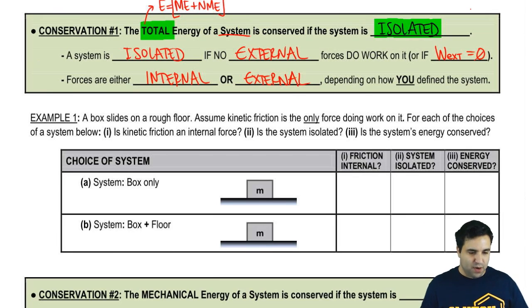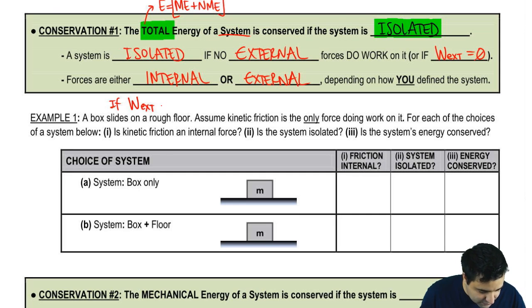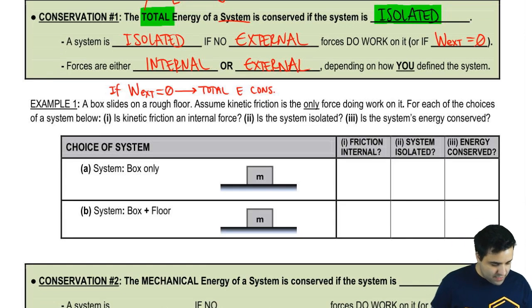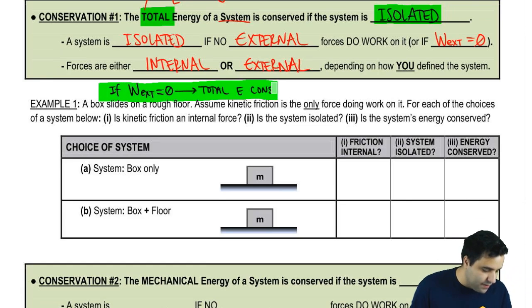But the basic idea, if I could summarize all of this, everything in this box in one line, it would be that if there is no external work, if the work done by external forces is zero, then the total energy is conserved. That is sort of the one line idea there.